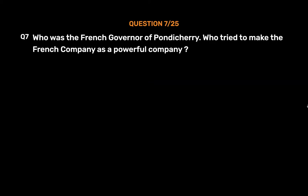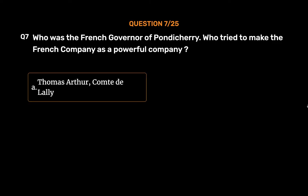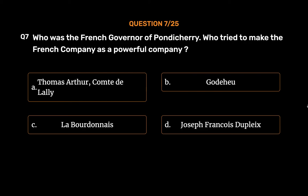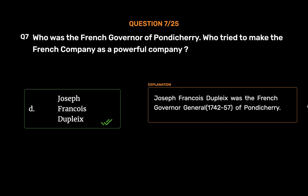Question No. 7: Who was the French governor of Pondicherry who tried to make the French company a powerful company? Option A: Thomas Arthur Cote de Lally, Option B: Godet Heu, Option C: Labo Ordinary, Option D: Joseph-François de Lally. The correct answer is Option D, Joseph-François de Lally. He was the French governor-general (1742–57) of Pondicherry.